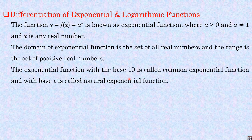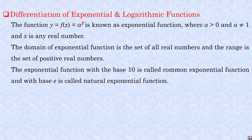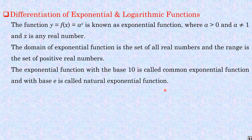The exponential function with base 10, f(x) = 10^x, is called the common exponential function. If you take the base as e — the Napier number, which is an irrational number — then it is known as the natural exponential function or Napier exponential function.